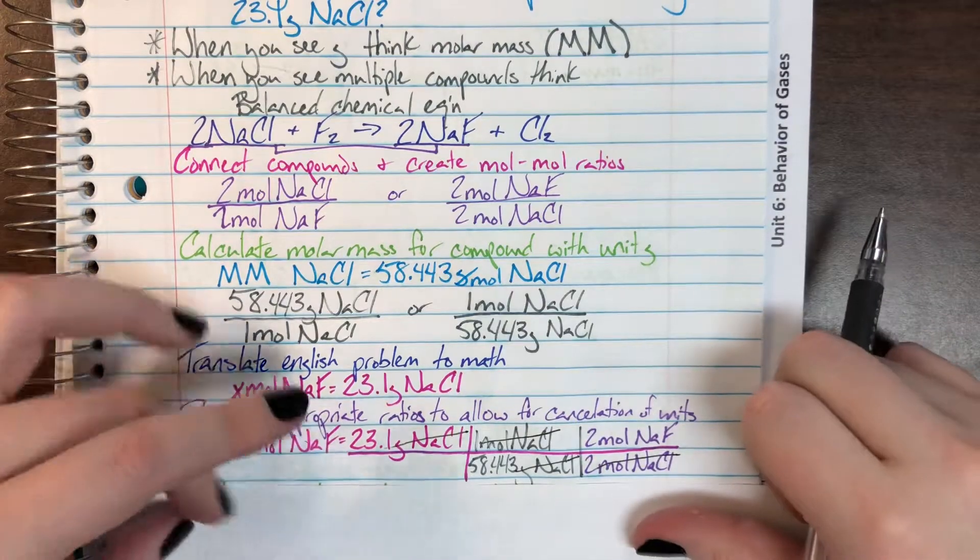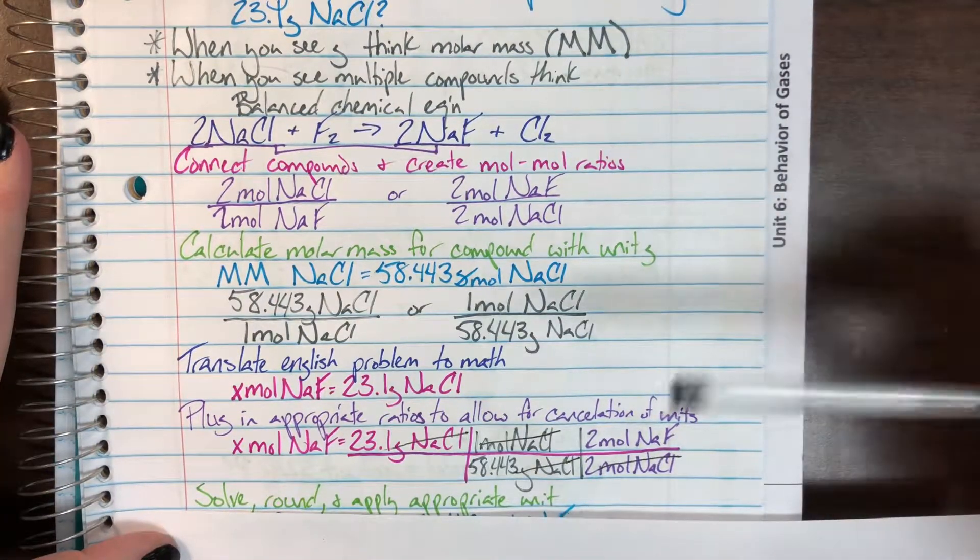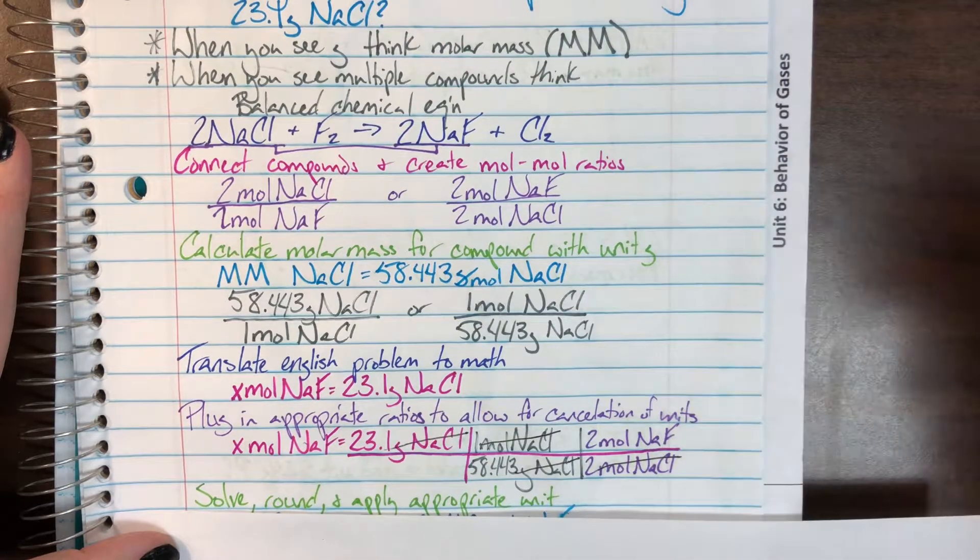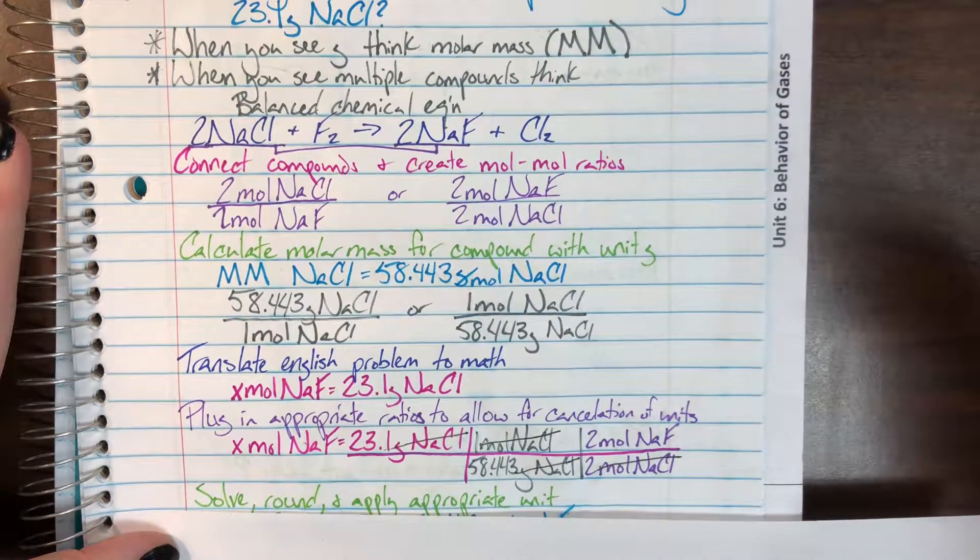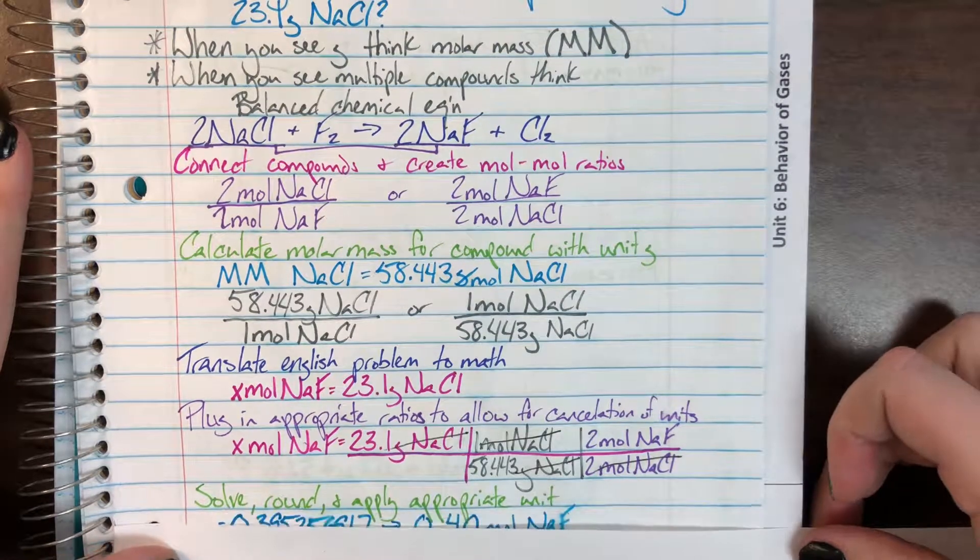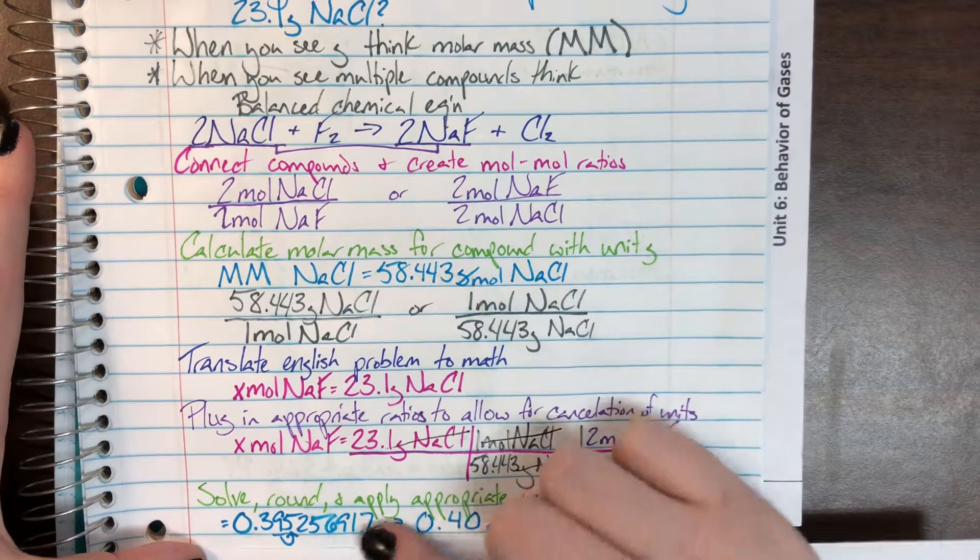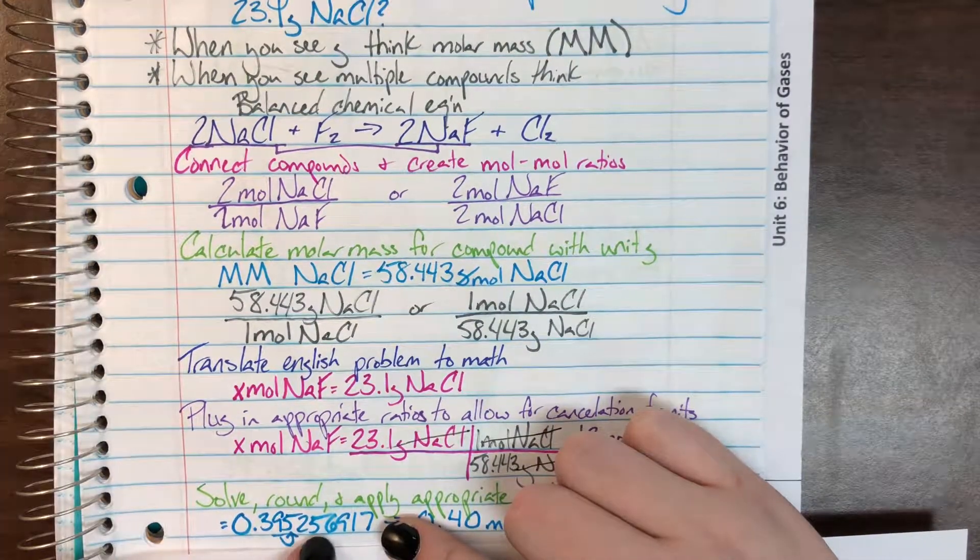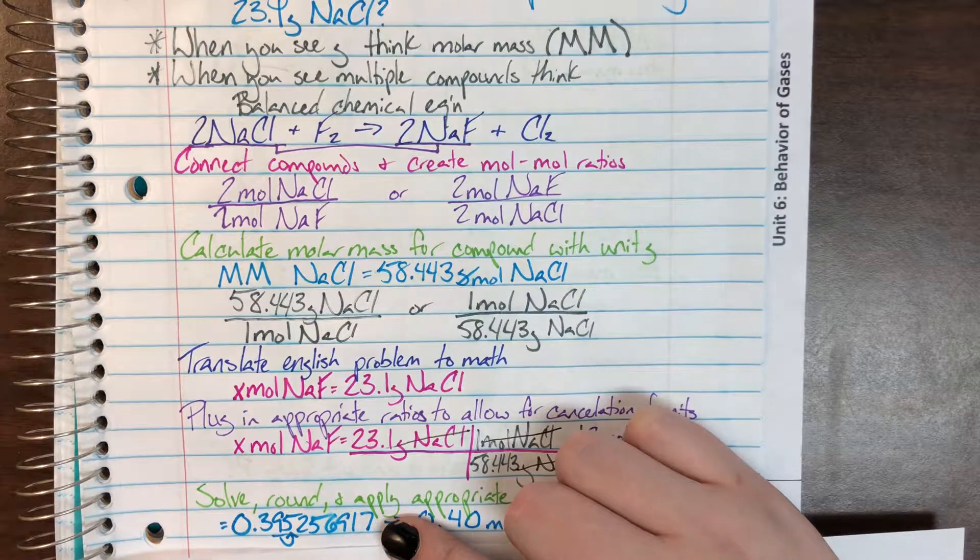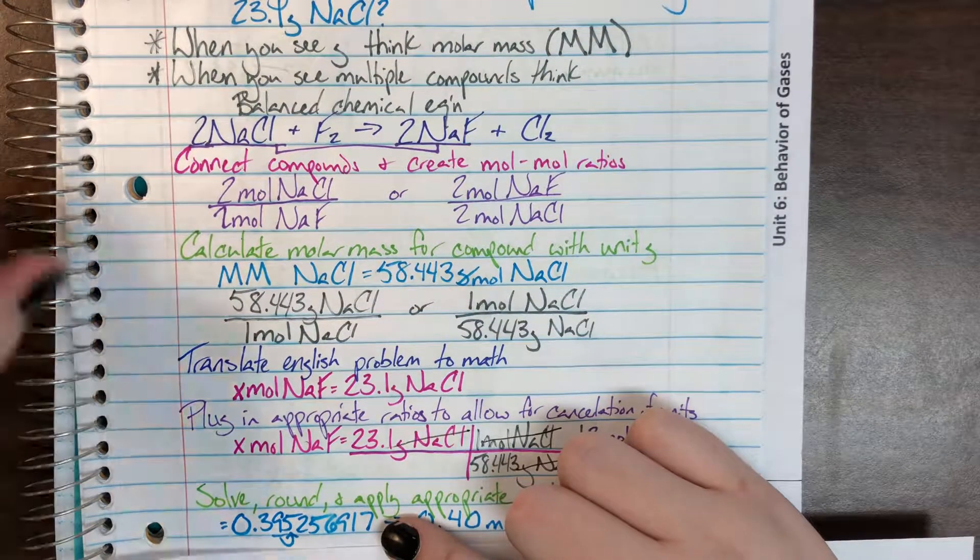Which means that I am done. I can go ahead and solve, round, and apply my appropriate units. I am done with the setup. Now, whenever we plugged it into the calculator, remember we write down every single number that comes out of the calculator. So, that is 0.395256917. When I do that, I go ahead and I round.